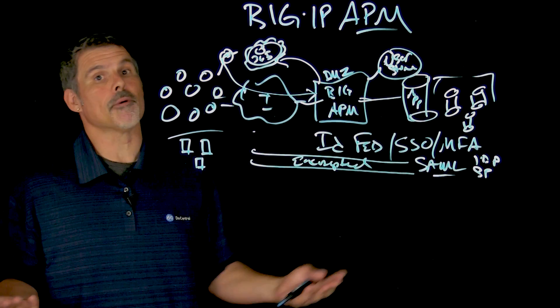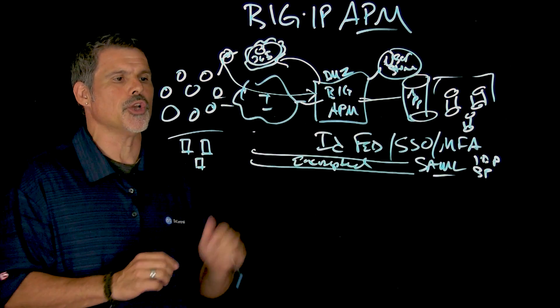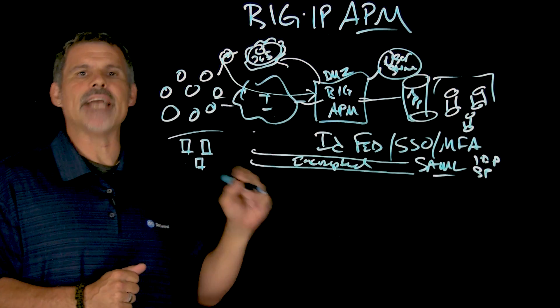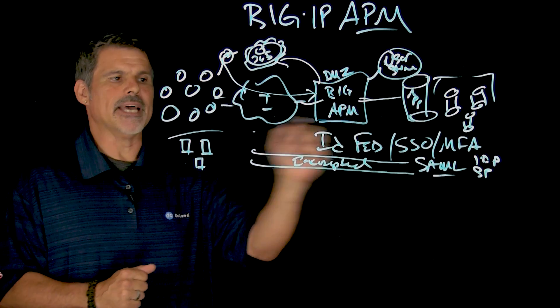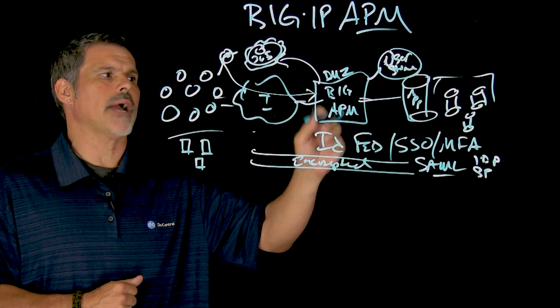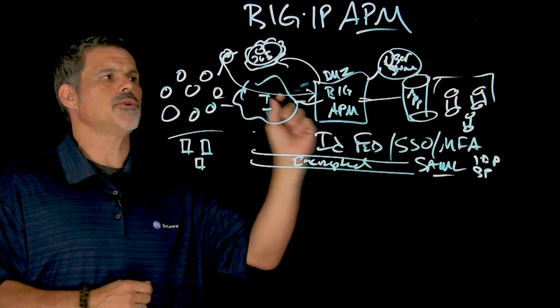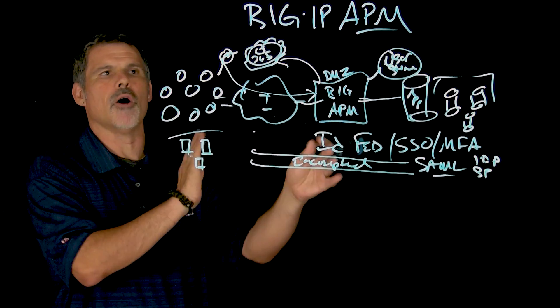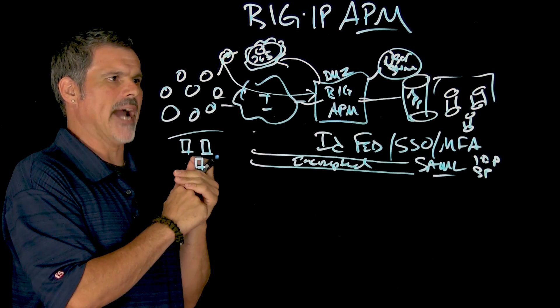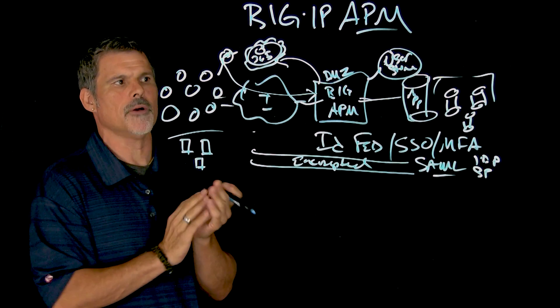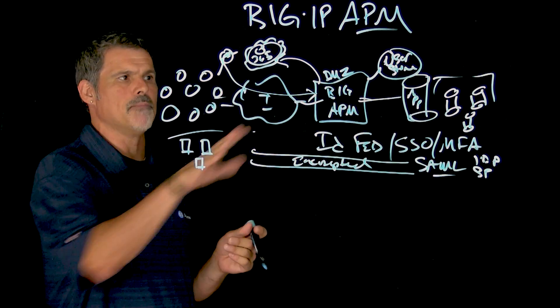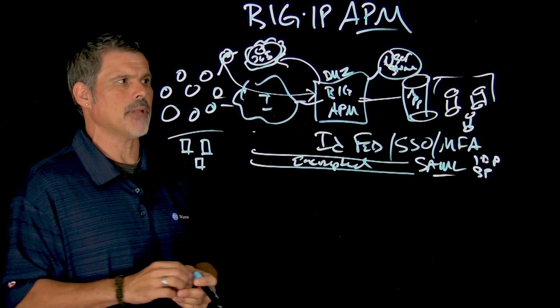If you don't want to provide a full layer three tunnel, you can do specific application access tunnels. So an encrypted tunnel just directly to Outlook, or to SharePoint, or to some other financial app on the back end, not necessarily full-blown layer three network access, but access to a specific application.